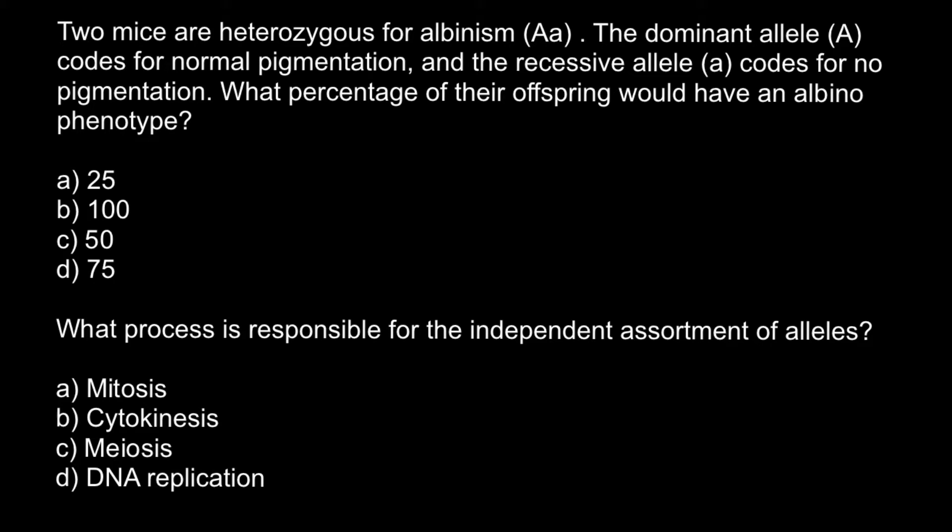When we have two alleles, one dominant and one recessive, these two alleles can make three genotypes: homozygous dominant, heterozygous, and homozygous recessive. The first two genotypes would make one phenotype, the normal phenotype, and the homozygous recessive genotype would make another phenotype, which is albino.